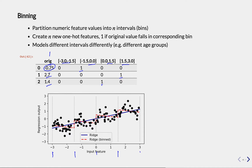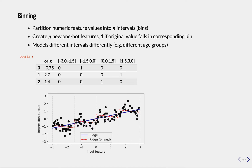The benefit of binning is that now we can fit a four-dimensional hyperplane which hopefully fits our data better. If you plot that in the space of the original feature, you get a different line for every bin — a stepwise function. This hopefully approximates your data better and gives you more room. The more fine-grained the bins are, the more closely the steps will follow the data. One caveat is that you still only learn one coefficient for the original feature, meaning the slope will always be the same within a bin.